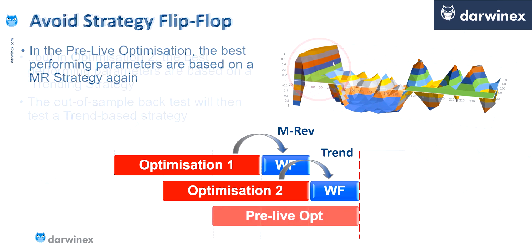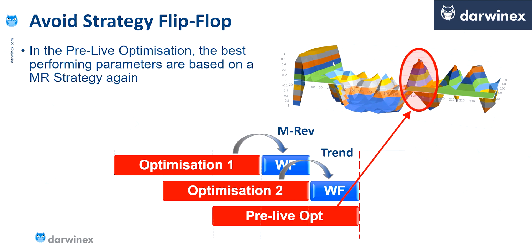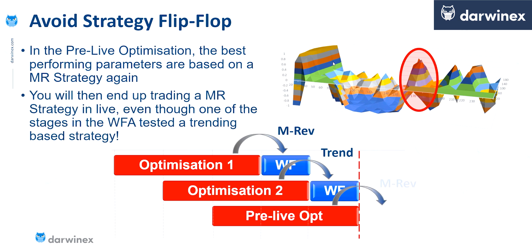And yet again, for the pre-live optimization — this is over a different period of time — it's likely that the best parameter values will come from a different part of the optimization surface, such as this one indicated here, which again aligns to a mean reverting type system. So the problem now becomes obvious. In our walk-forward validation phases, we've actually been validating completely different types of system. In the first one we validated a mean reversion system, and in the second one we validated a trend-following system, which of course means the whole process is flawed.